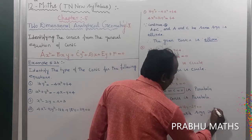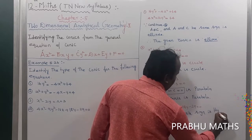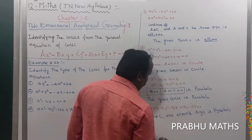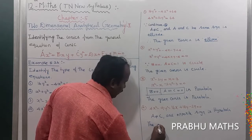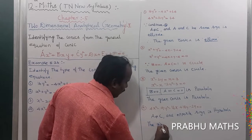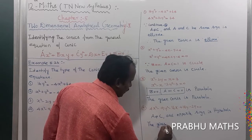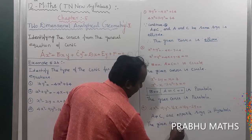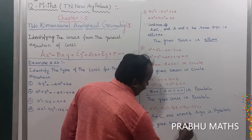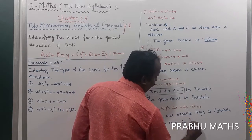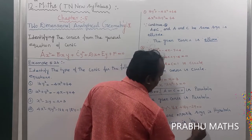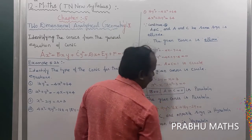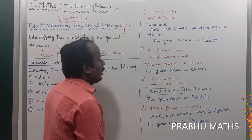Since a ≠ c with opposite signs, the given conic is a hyperbola.